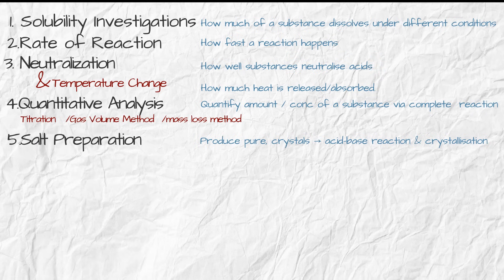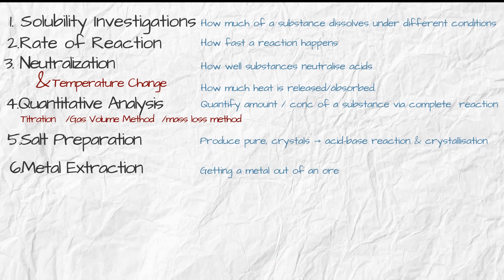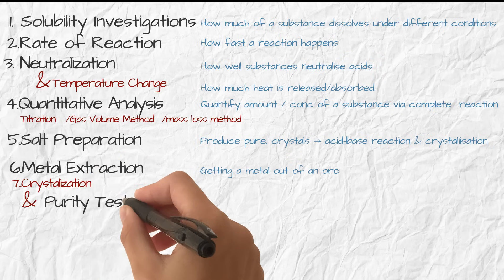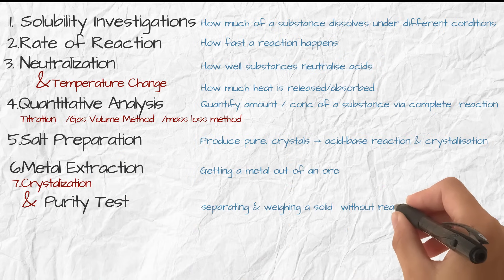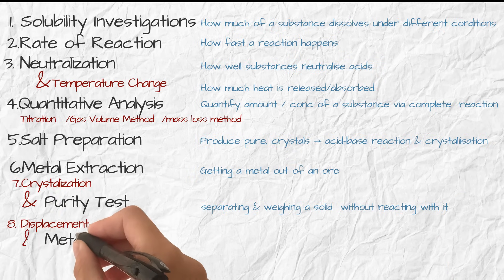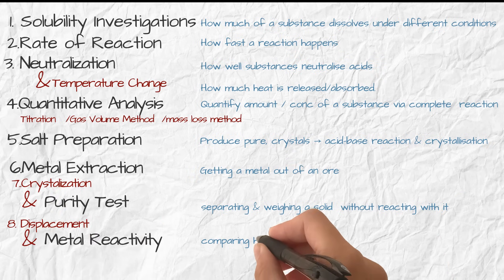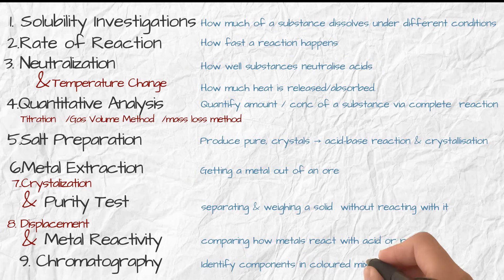Number six, metal extraction, getting a metal out of an ore. Number seven, crystallization and purity test, separating and weighing a solid to see how much it is inside without reacting with it. Number eight, displacement and metal reactivity, comparing how metals react with acid or rust. Number nine, chromatography. Identify components and colored mixtures using solvent separation and RF values.